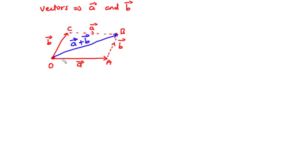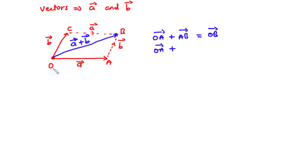Thus, we have vector OA plus vector AB equal to vector OB. Or equivalently, vector OA plus vector OC equals vector OB, since vector OC equals vector AB.